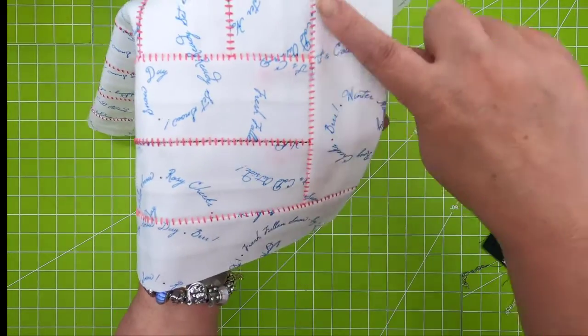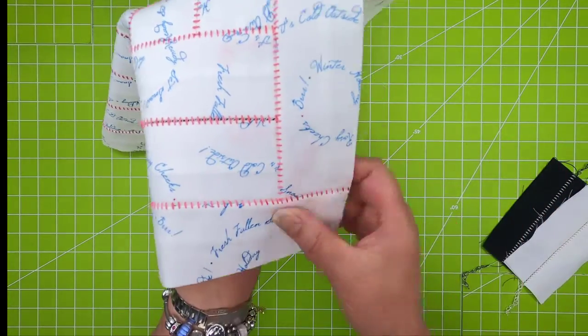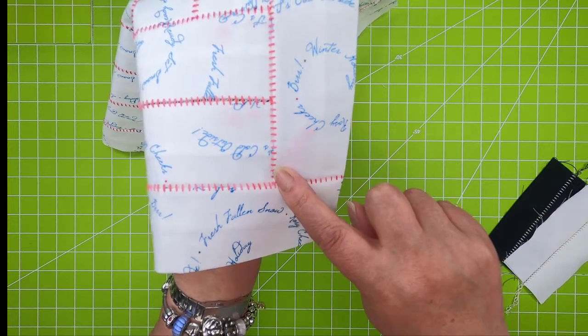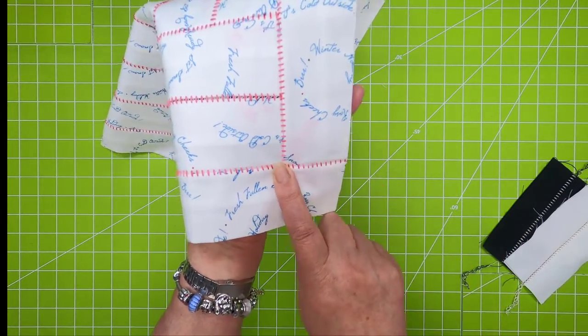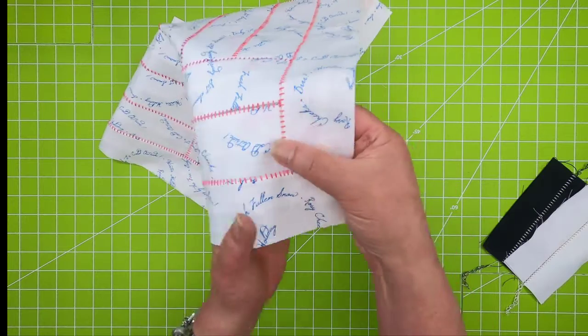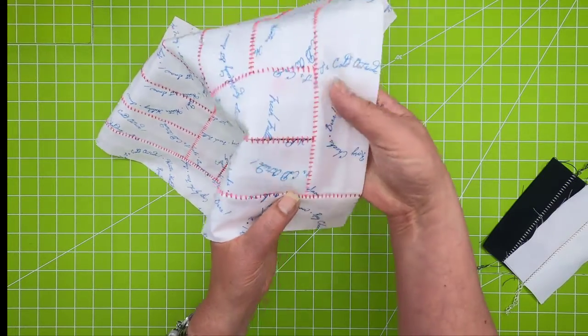And once again, in this scenario, you can't see through that because this is actually what I would consider a closed seam, meaning that there isn't a gap in between.